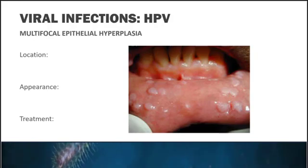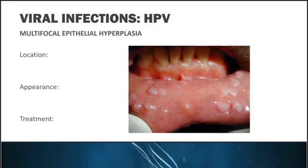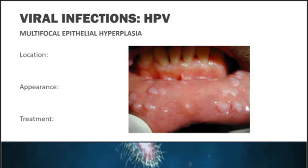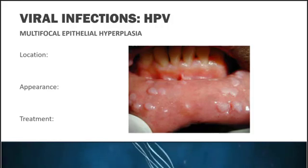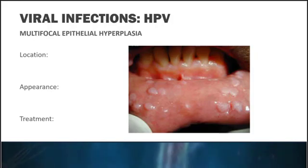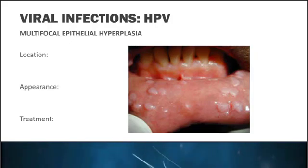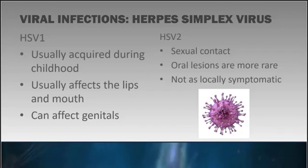The last of the three benign HPV lesions is multifocal epithelial hyperplasia, also referred to as Heck disease, and is usually found in children. We would see multiple pale pink nodules throughout the oral mucosa, which we could distinguish from a fibroma because a fibroma tends to happen due to irritation. Unlike verruca vulgaris and condyloma accuminatum, these do not contain finger-like projections. They also tend to spontaneously resolve within a few weeks or months after onset, so they do not require any treatment.